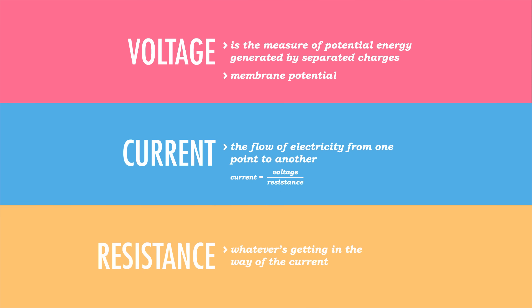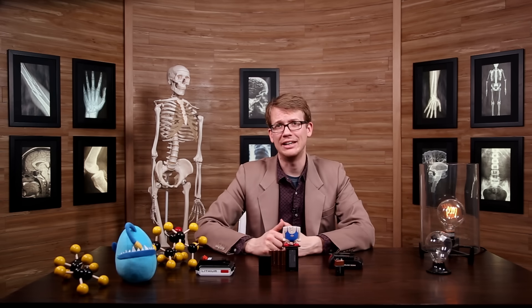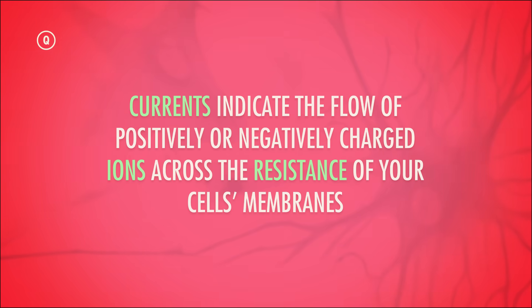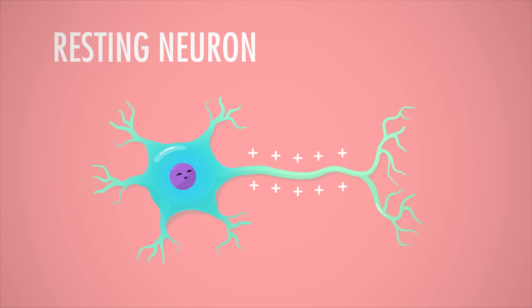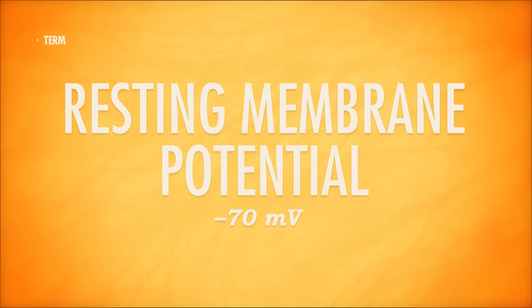Resistance is just whatever's getting in the way of the current. Something with a high resistance is an insulator, like plastic, and something with a low resistance is a conductor, like metal. When we talk about these concepts in terms of you, we're typically talking about how currents indicate the flow of positively or negatively charged ions across the resistance of your cell's membranes. A resting neuron is like a battery just sitting in that sack that is you. When it's just sitting there, it's more negative on the inside of the cell, relative to the extracellular space around it. The difference is known as the neuron's resting membrane potential, and it sits at around negative 70 millivolts.